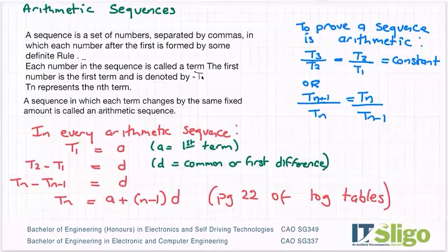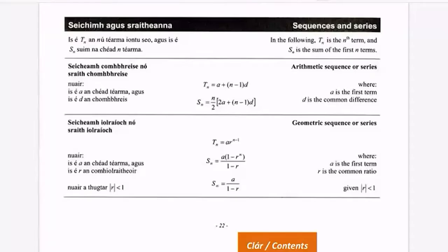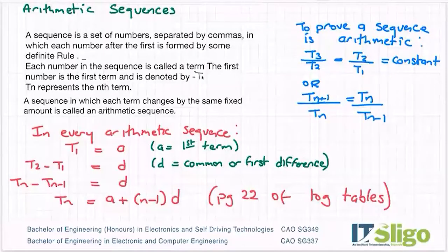And then when you're asked to come up with an expression or formula for the nth term of a sequence, we use the formula A plus n minus one times D. And this is all for an arithmetic sequence. And that formula is given here in the data sheets. So Tn is equal to A plus n minus one times D.